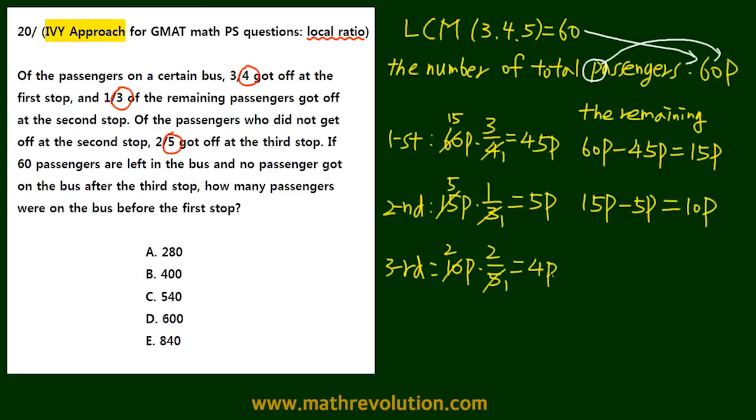And this is the local ratio. So 10p minus 4p equals 6p. It says 60 passengers are still left, so 6p equals 60, which means p equals 10. The total number of passengers was 60p, so we multiply 60 by 10 and get 600 passengers.